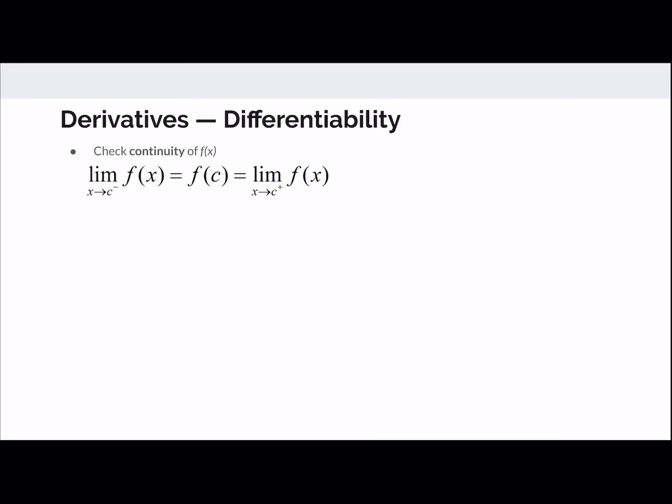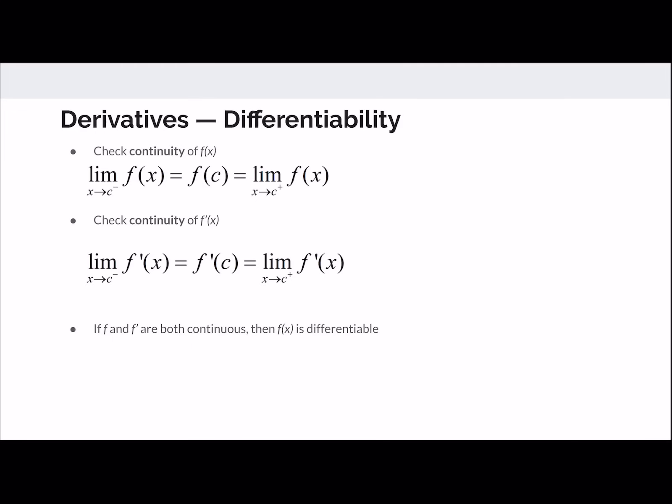Differentiability is much like continuity. First, check that the function is continuous — the limit from the left equals the limit from the right equals the function's value, so no holes. Then check that f prime is the same from the left and right and is defined at c. A differentiable function is continuous, so if the AP test says a function is differentiable, you can state it's also continuous — important when applying theorems like the Intermediate Value Theorem.